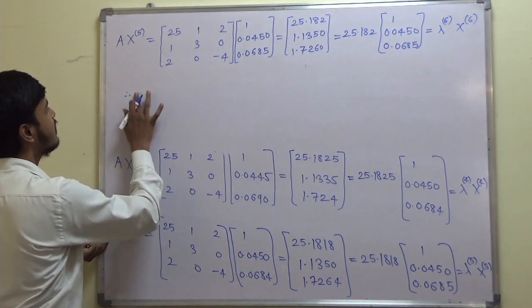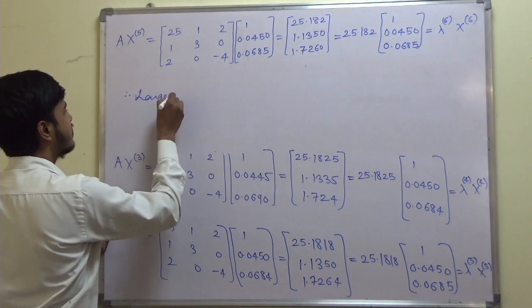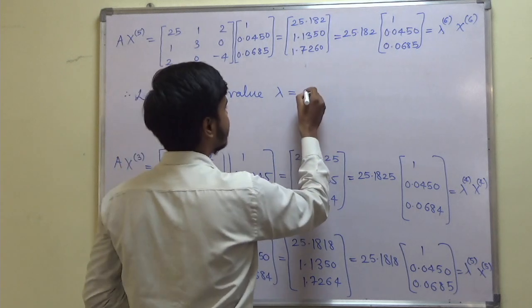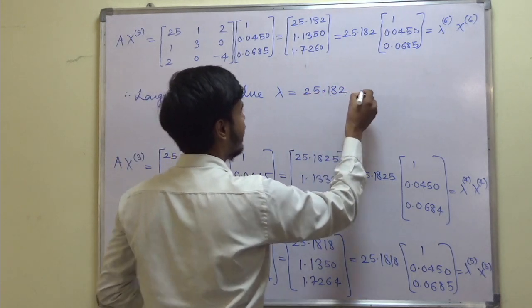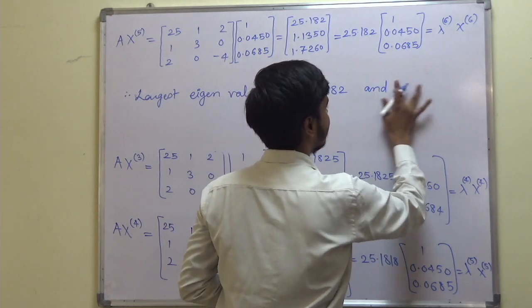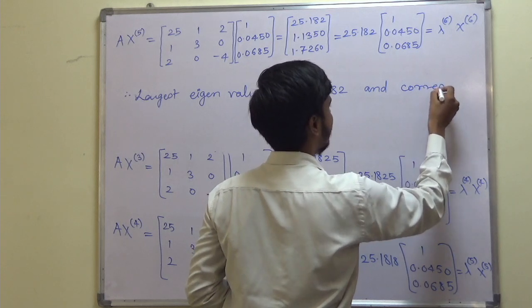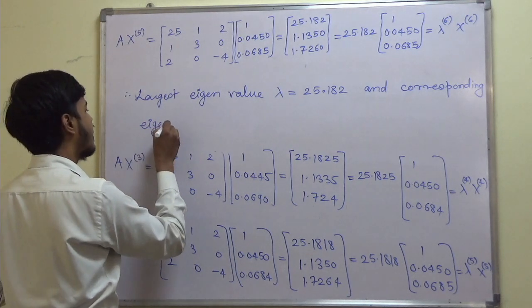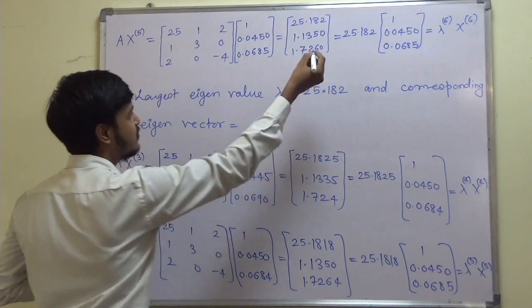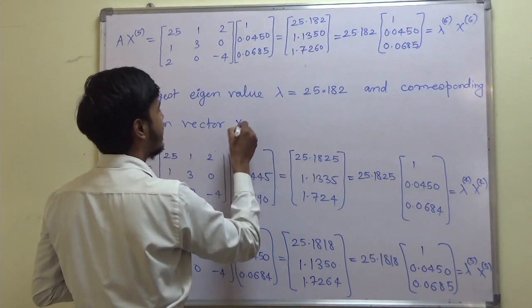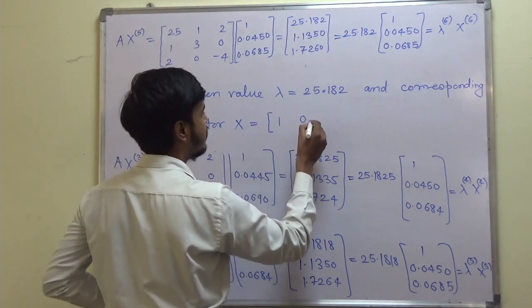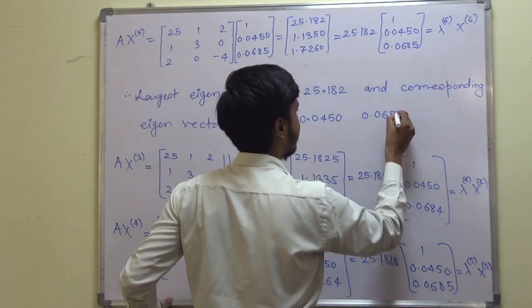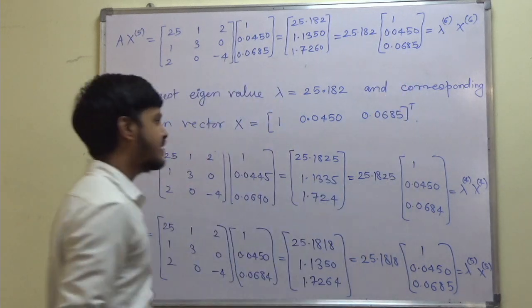Therefore, the largest eigenvalue is λ = 25.182, and the corresponding eigenvector is x = [1, 0.0450, 0.0685]ᵀ. This is the required largest eigenvalue and eigenvector.